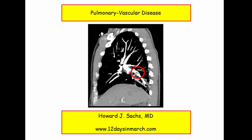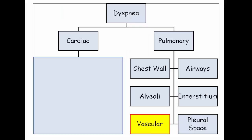Welcome back to 12 Days in March. In this section, we will review the pulmonary vascular disorders and the many derivative concepts that make for great board fodder. I open each pulmonary section with this algorithmic approach to dyspnea, and the patient with pulmonary vascular disease will most assuredly present with dyspnea as a symptom. The algorithm helps organize the many pathophysiologic disease processes covered in pulmonary and represents a practical clinical approach to the dyspneic patient. Let's get started on disorders of the pulmonary vasculature.